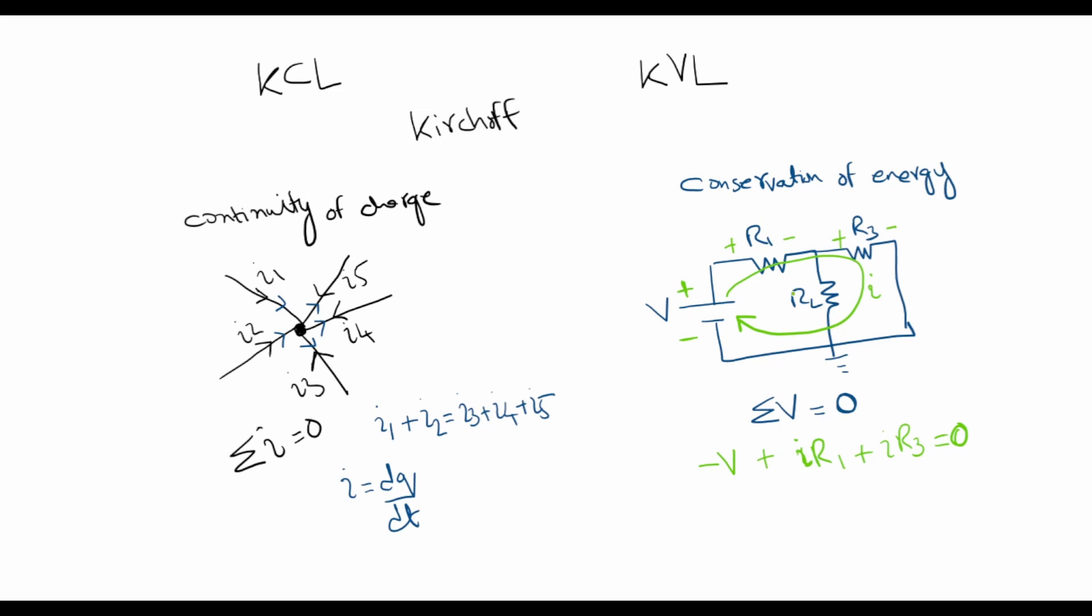In a similar way, other loops can be written. I can have a loop like this and another loop like this. As long as we are returning to the same point, then the sum of the potential differences should be zero. And this comes from the basic principle of conservation of energy.